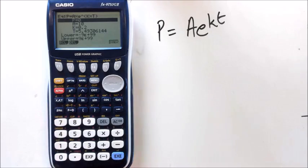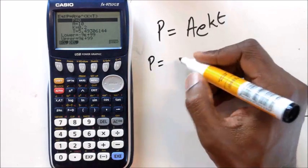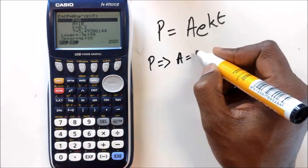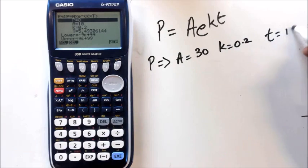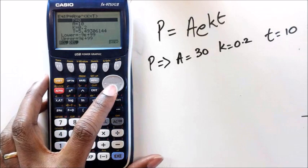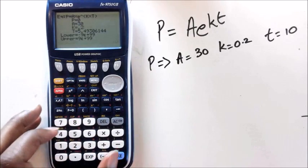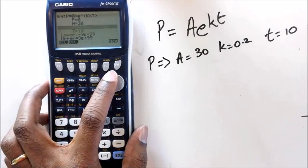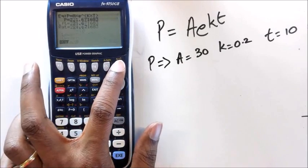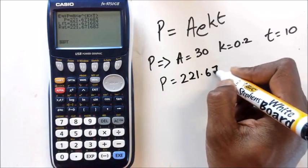Okay, so what I want to show you is, I know there's a few numbers here, don't worry about them. I want to know, what is P when A equals 30, k equals 0.2, and t equals 10. So P is what I'm trying to find, so I'm going to leave it as it is. I'm going to change A to 30, k to 0.2, t I'm going to put it as 10, and when I go to P and if I press solve, I get P equals 221.67.